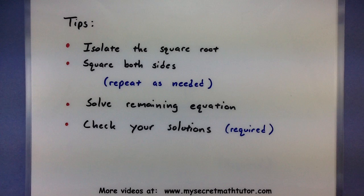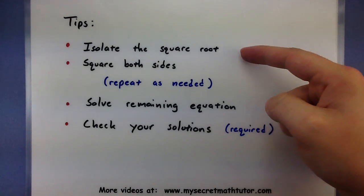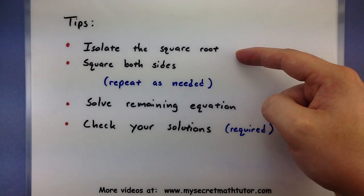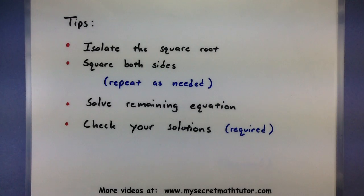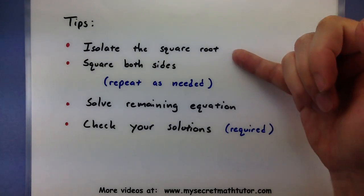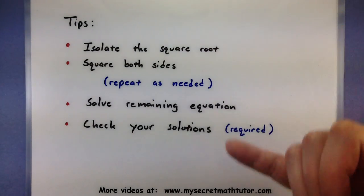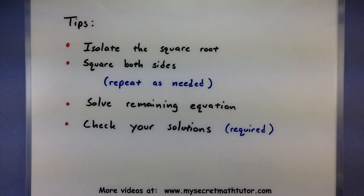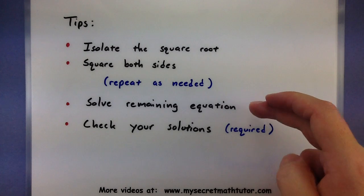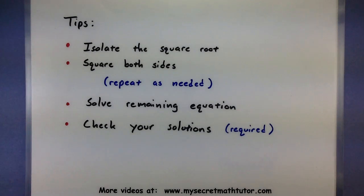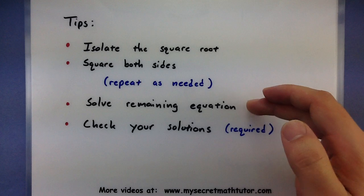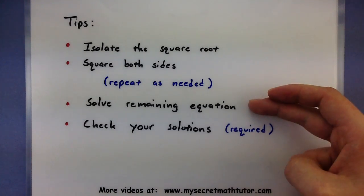When you have square roots inside of square roots, your two biggest tools are isolating a square root on one side and then squaring both sides to get rid of that root. Now since we'll have so many roots packaged up inside of one another, we'll actually have to repeat these first two steps until all of our roots are gone. Once we have removed all of the roots from the equation, we'll be able to solve the remaining equation. Maybe it'll be linear, maybe it'll be quadratic.